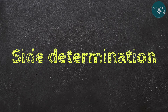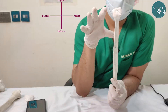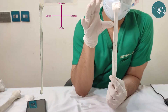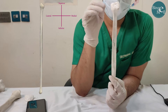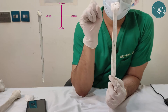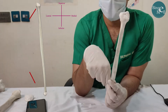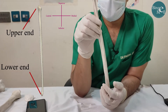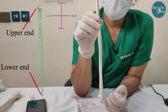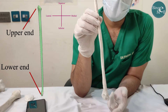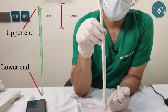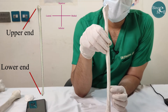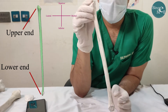Side determination: in order to determine the side of the fibula, first of all we need to recognize its upper and lower end. Recognition of the upper and lower end of the fibula is quite confusing because the upper and lower ends look similar.